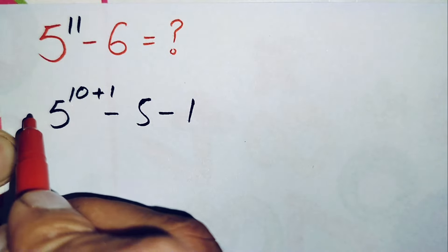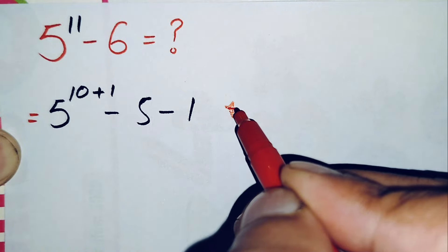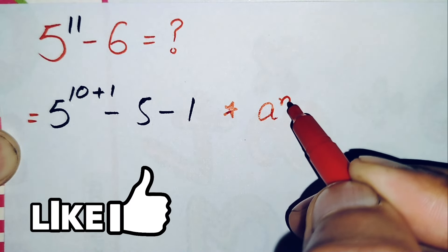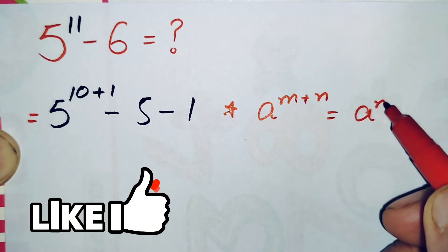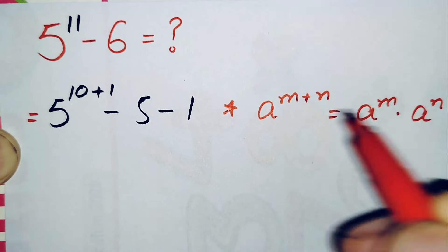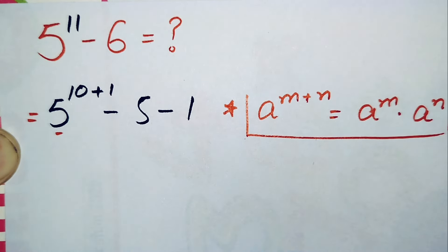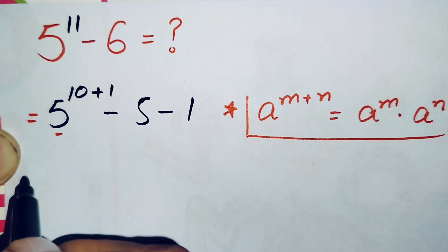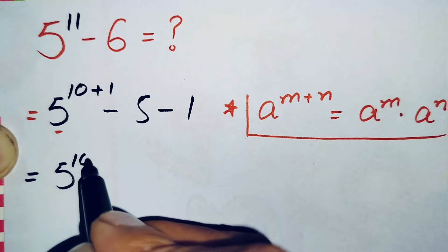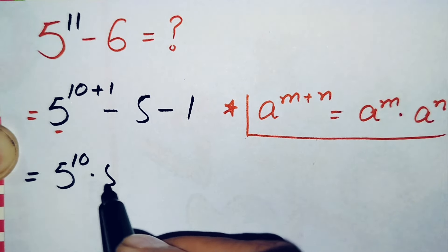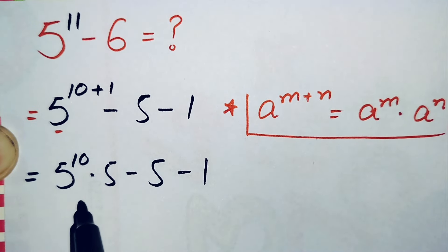In the first term, 5 raised to power 10 plus 1, we will use an exponential math property. The property states that r raised to power m plus n can also be written as r raised to power m times r raised to power n. Using this property, this term becomes 5 raised to power 10 times 5 raised to power 1, which is 5.